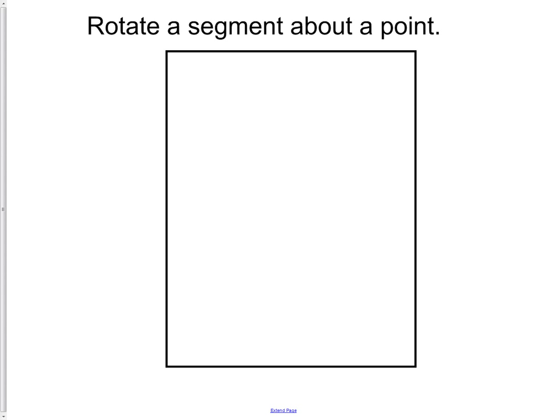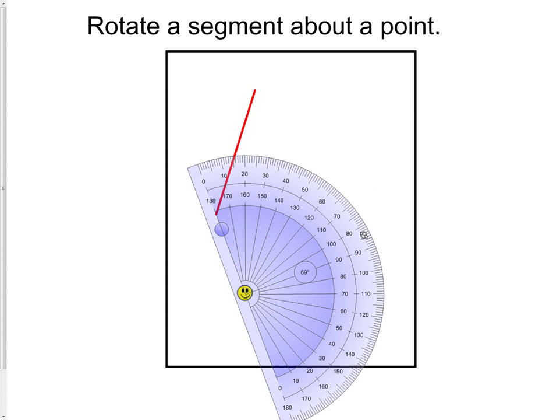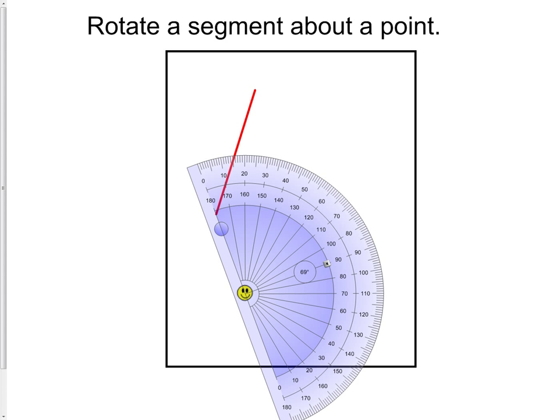Rotate a segment about a point. In this picture here, I want to rotate that segment, let's call it 50 degrees. The first thing we need to do is get our mark of 50 degrees. I have my compass centered at my point of rotation, which is the smiley face, and I want to measure 50 degrees. So I'm going to draw in a segment which will represent my 50 degree angle.